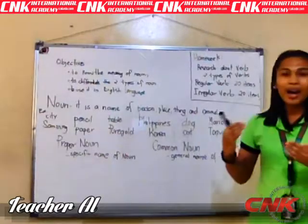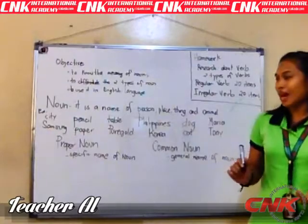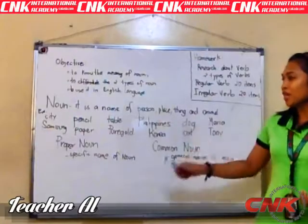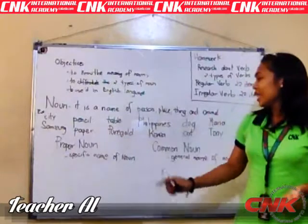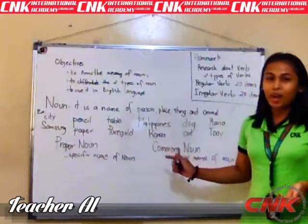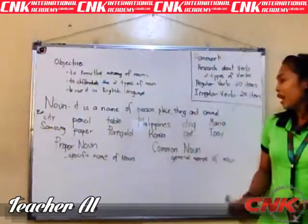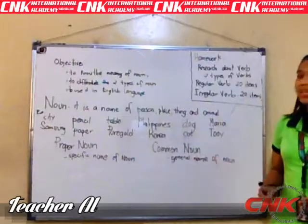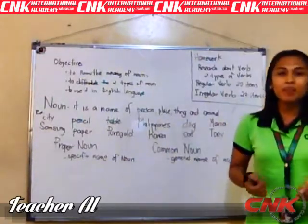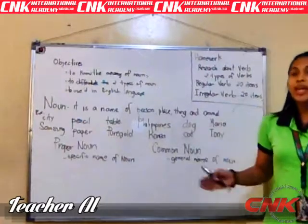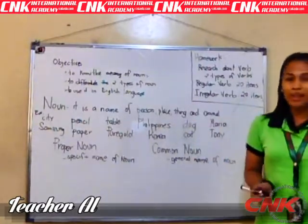Let me put these examples into the types of nouns. Common noun is a general name of a person, place, thing, or animal, and proper noun is a specific name. Common nouns usually begin with a small letter.